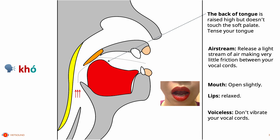Tense your tongue. The sound is an aspirated sound, so you have to release a light stream of air, making very little friction between the vocal cords. Open your mouth slightly, keep the lips relaxed. The last thing you have to remember about the KH sound is that it is a voiceless sound, so you don't have to vibrate your vocal cords.